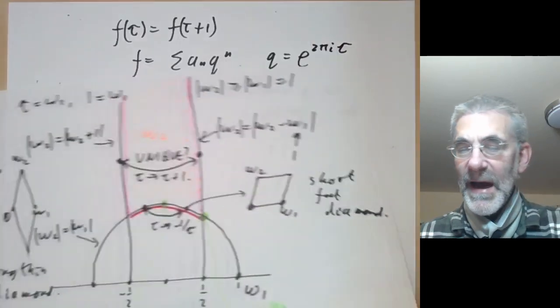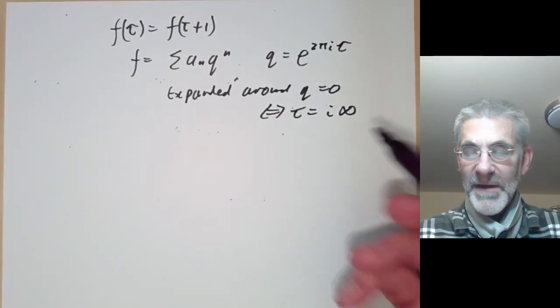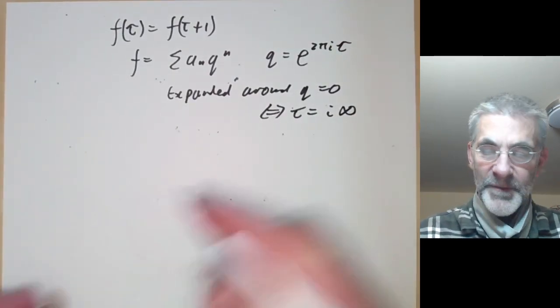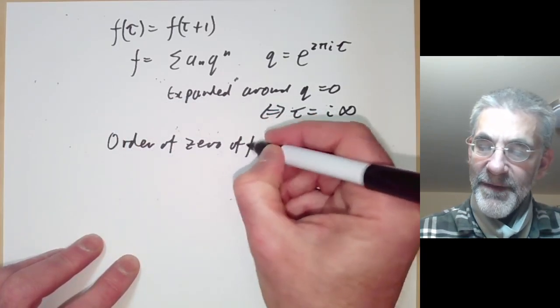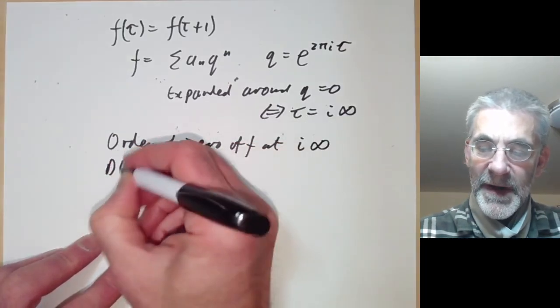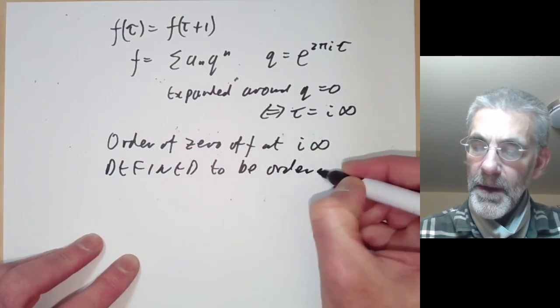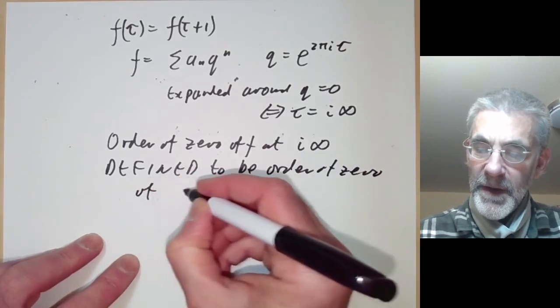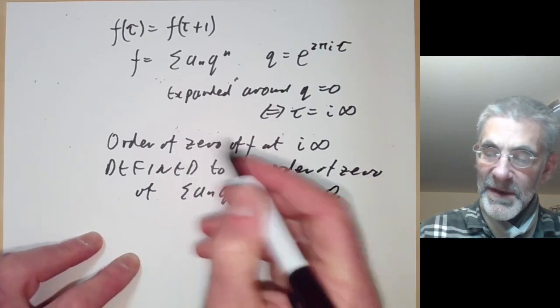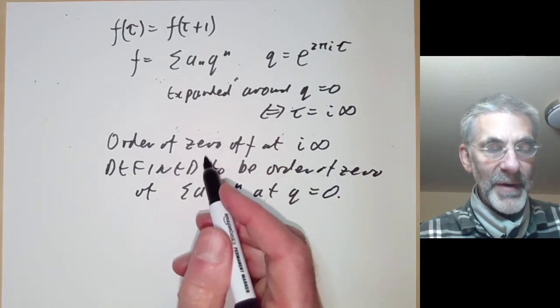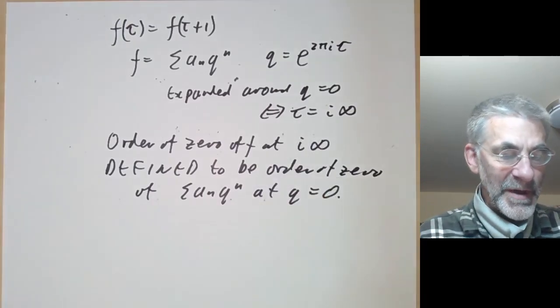So you can think of tau as being a point that's somewhere way up here, you just let the imaginary part tend to infinity. And we're going to say the order of the zero of f at i infinity is defined to be the order of the sum of a_n q^n at q equals zero. We will see the reason for this next lecture when we try and count the number of zeros of f, because it turns out you need to count the number of zeros at i infinity in order to get a nice answer.